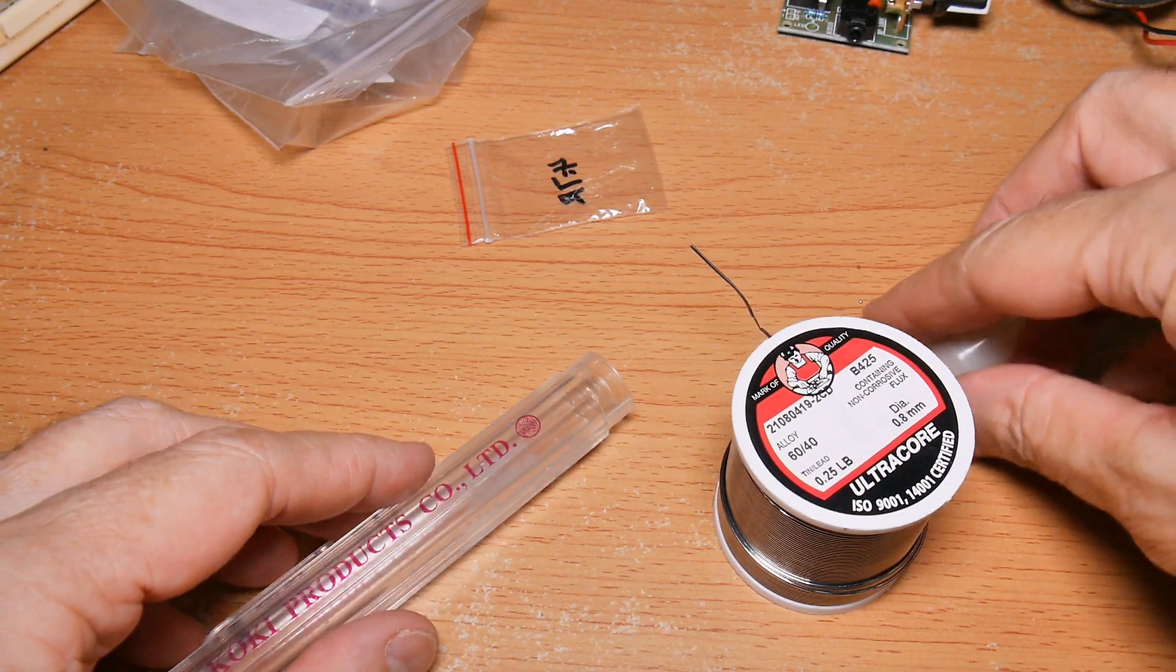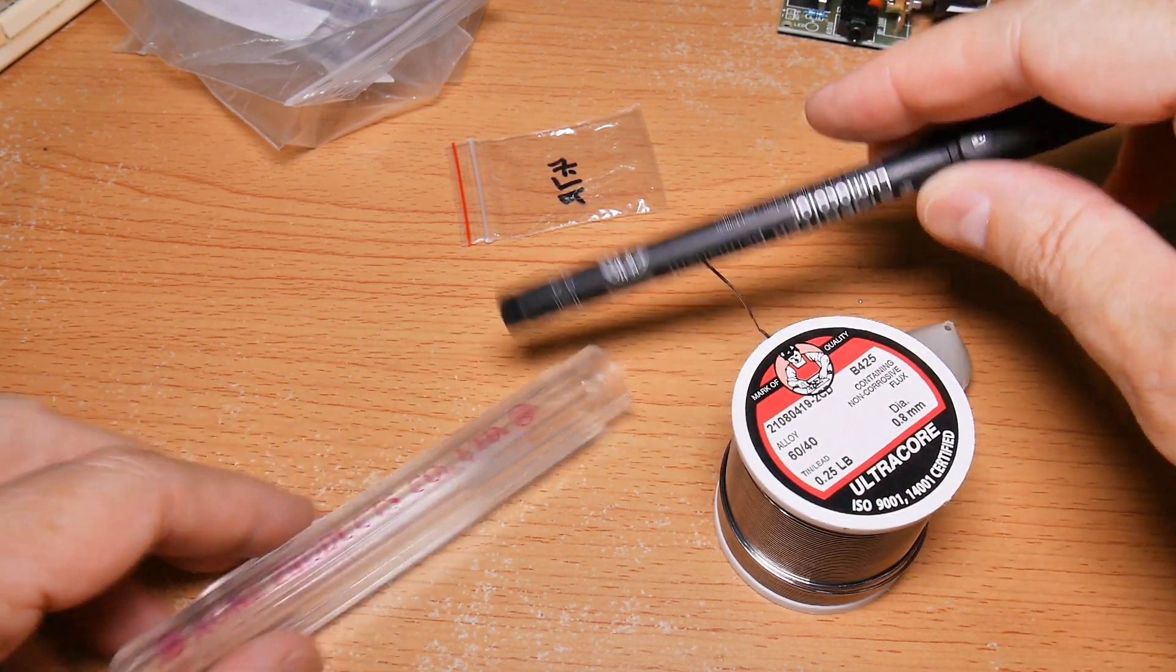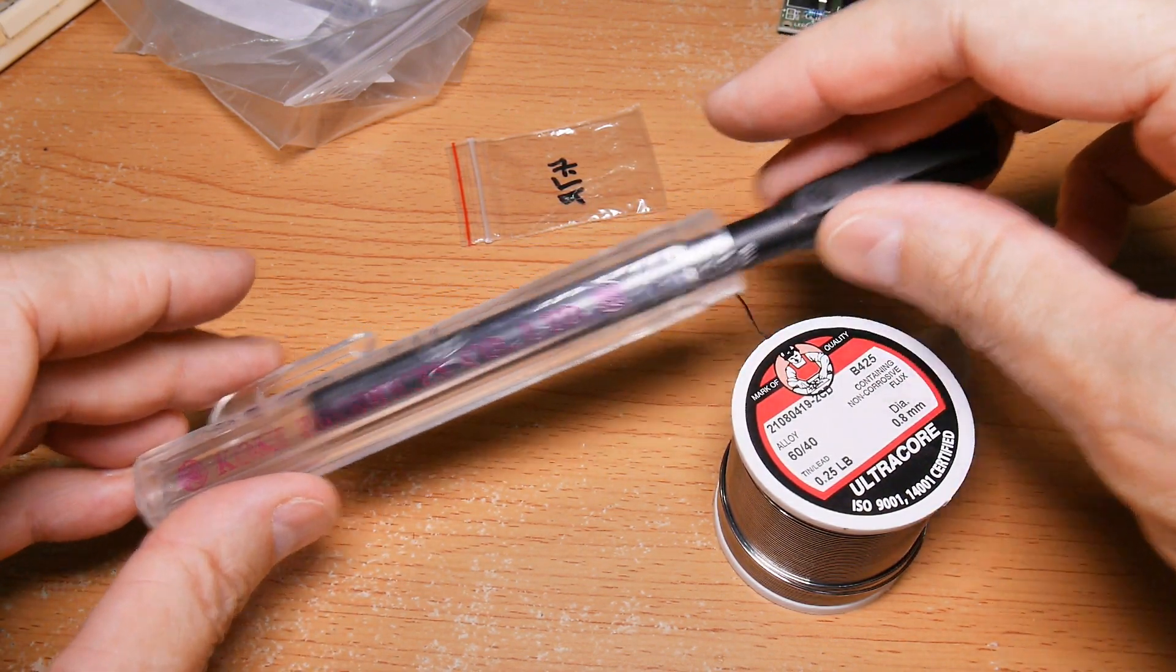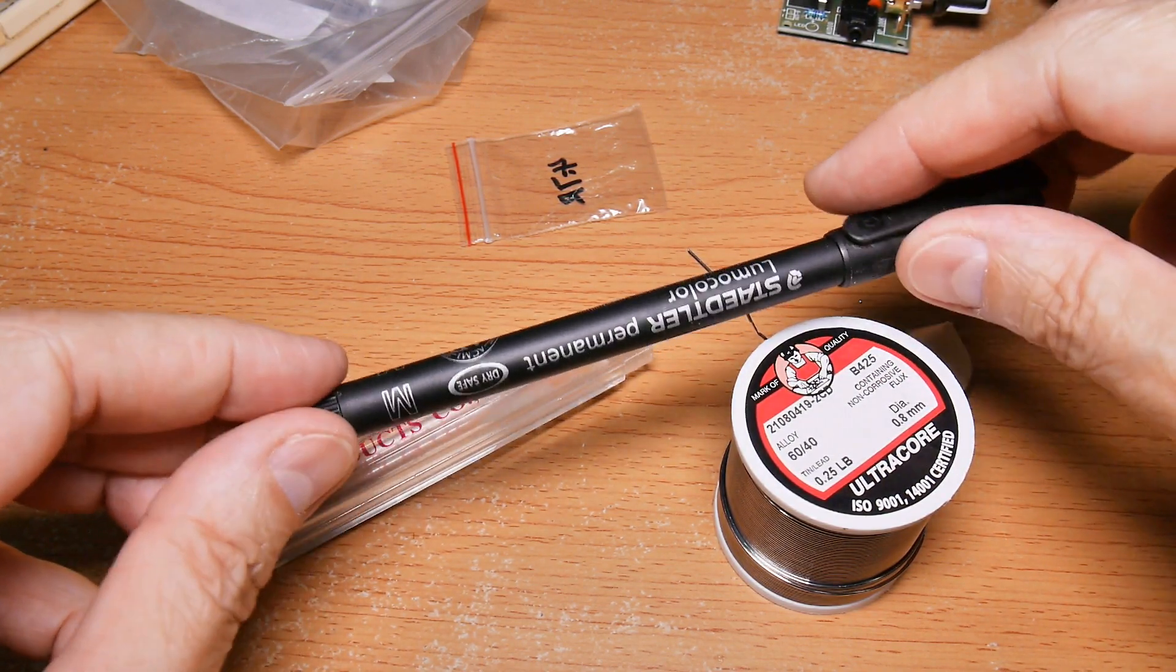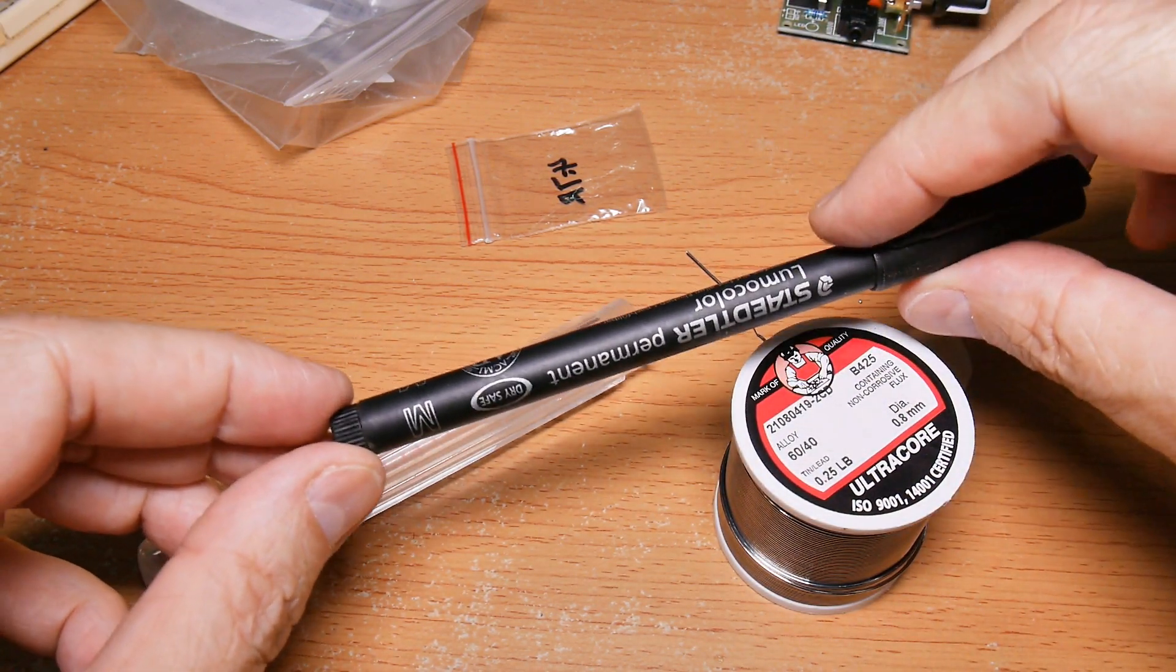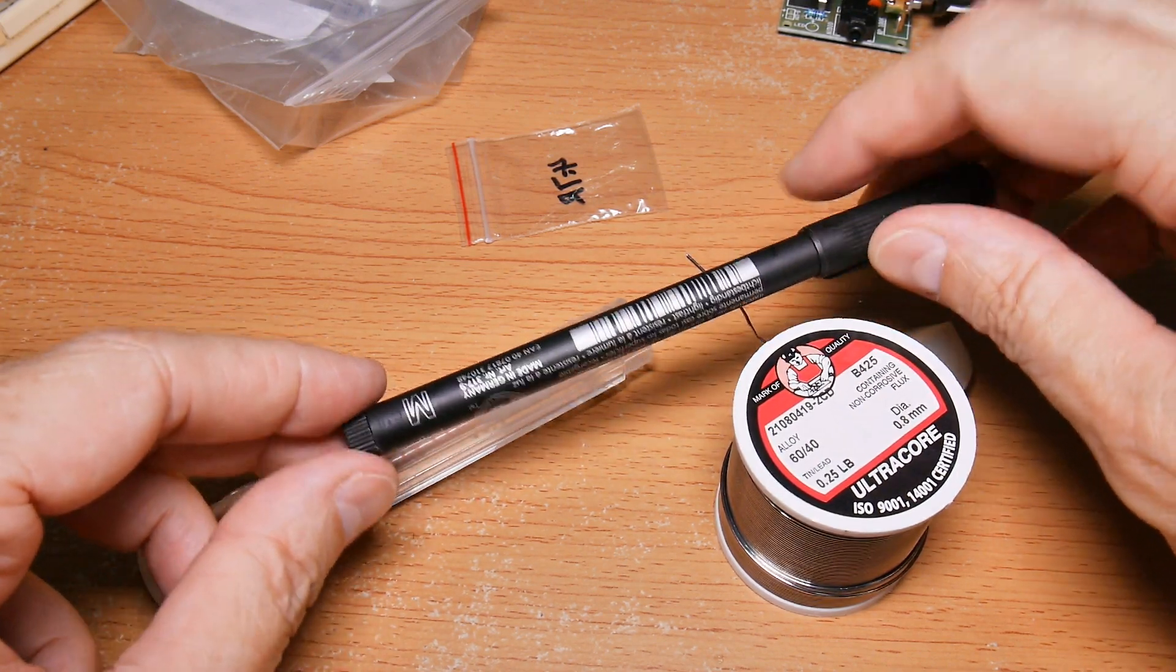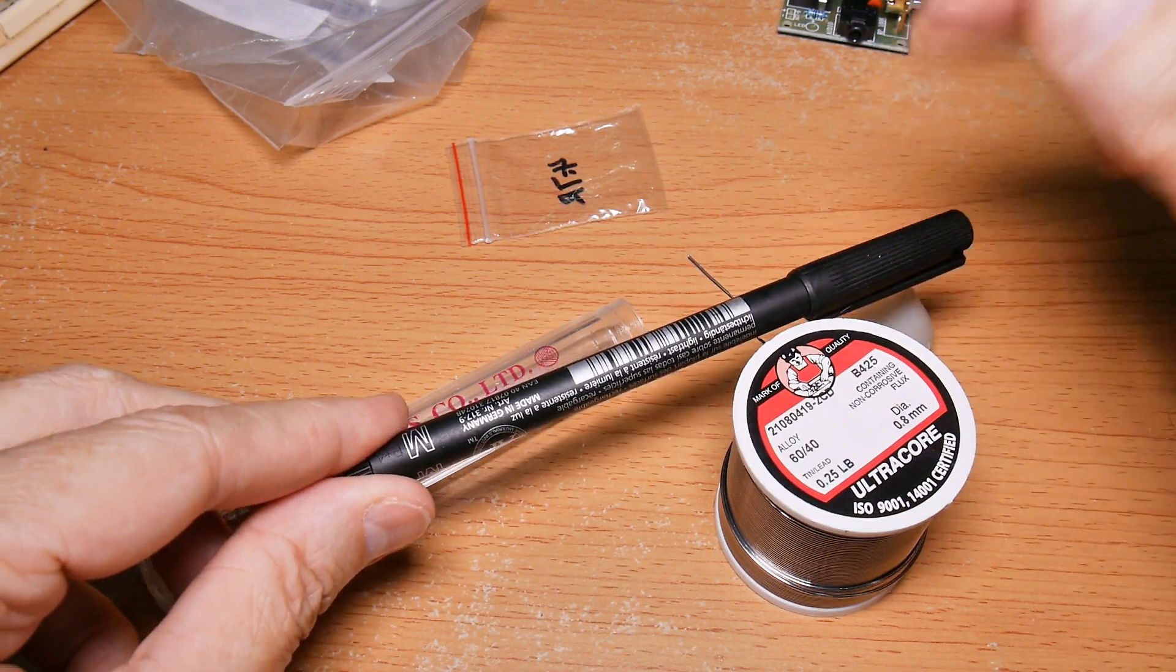The next step is to find something like this pen that's about the right length and is about the same size as the coil that was originally in there. Then we're going to wrap solder neatly around here and insert it in there. That's pretty much it.